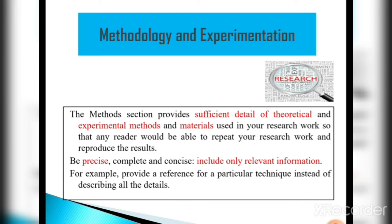Next is methodology and experimentation — a very important section. On the basis of the introduction and the literature review, we have to design methodologies and experimentation. This is essentially the practical work done in the lab. We have to explain our methods in detail. The methods section provides sufficient details of the theoretical and experimental methods and materials used in the research so that the reader will be able to repeat the research work and reproduce the results. Methodology and experimentation should be precisely written, complete, and concise — include only relevant information, for example providing a reference for a particular technique instead of describing all the details.